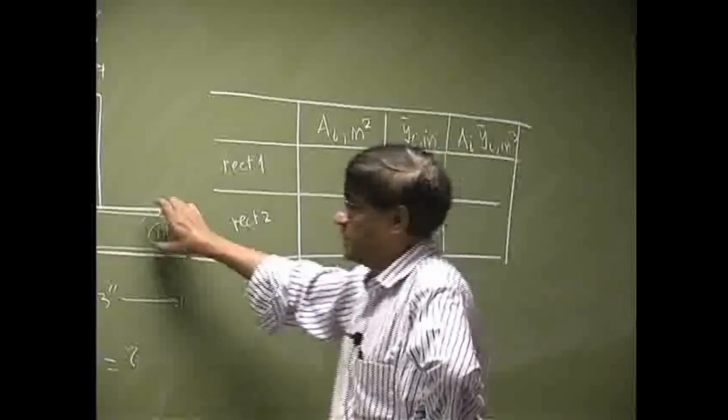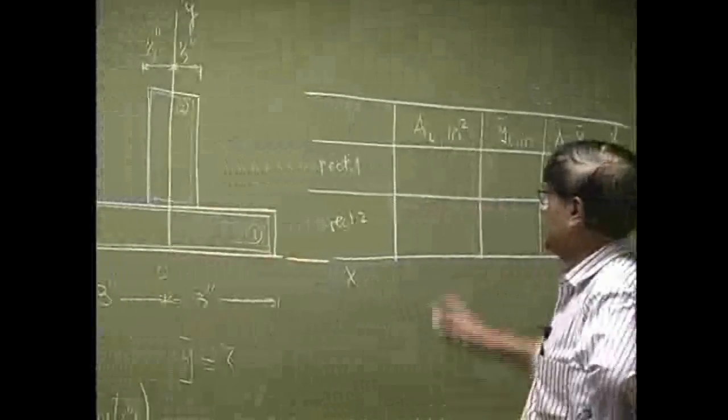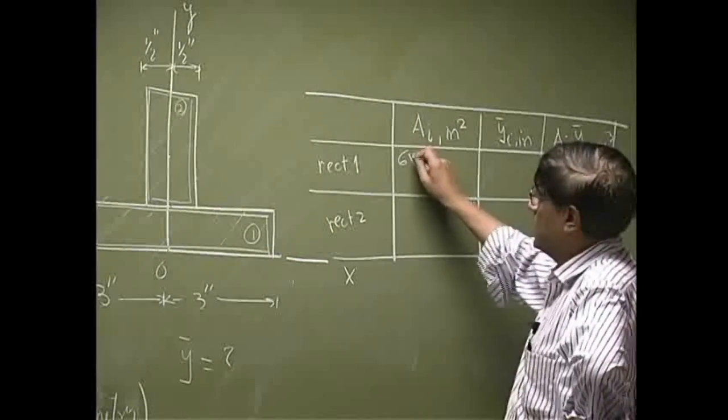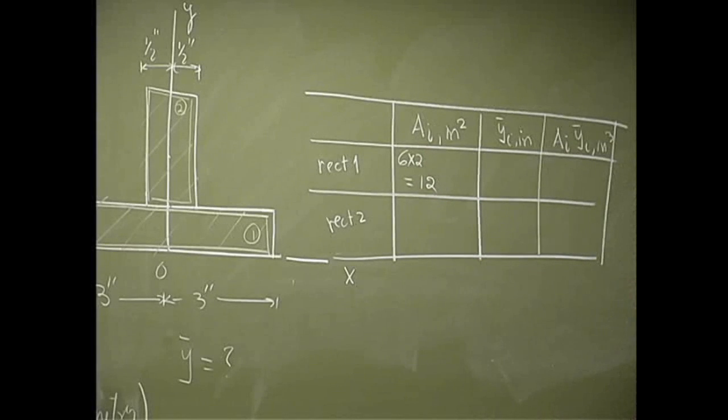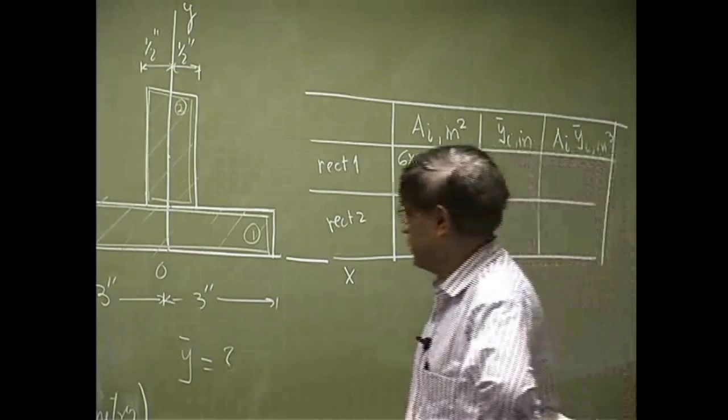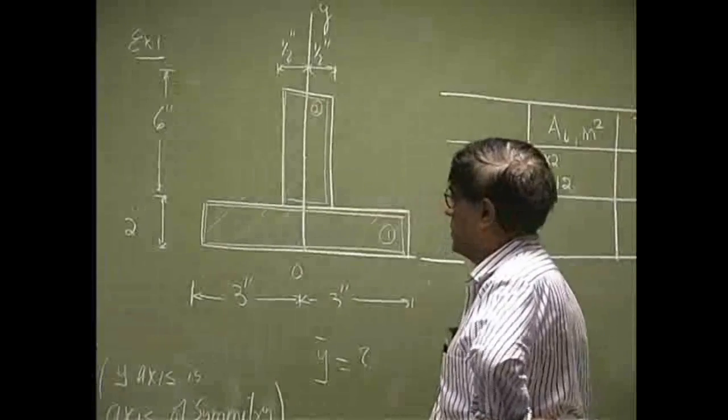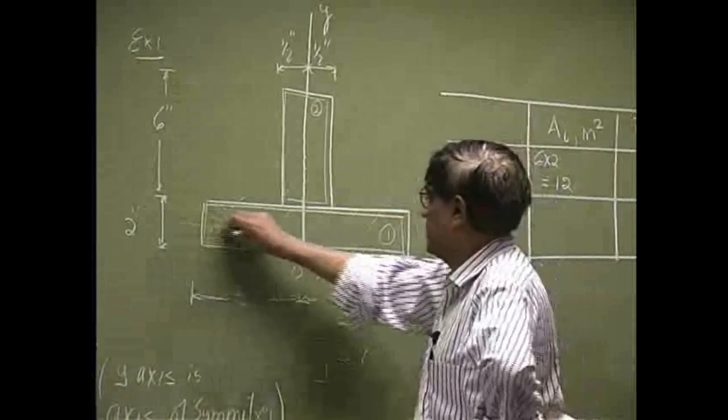Now, for the first rectangle, total width is 6, the height is 2. So the area by itself is going to be 12. Then we need to locate its centroid.